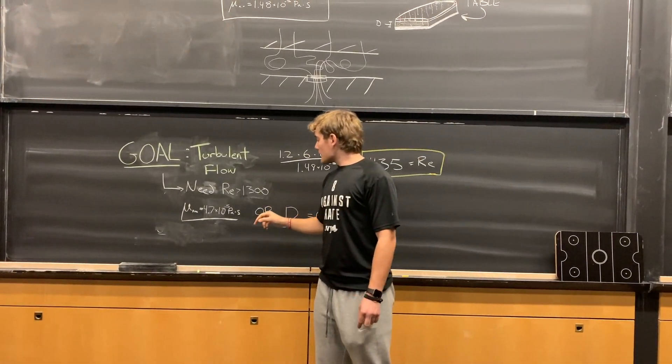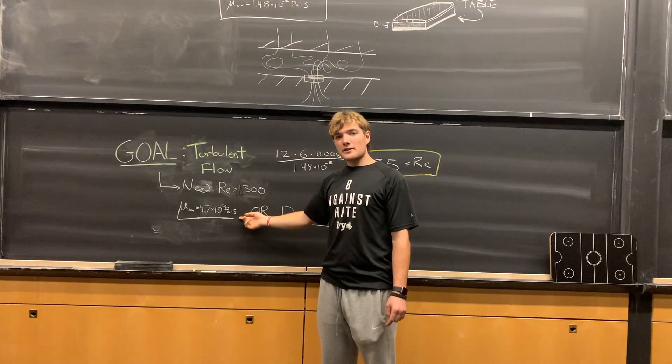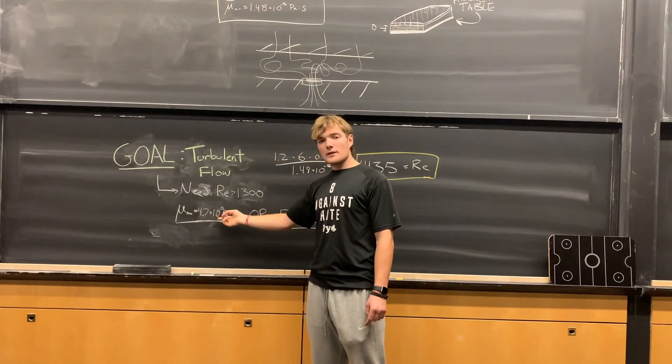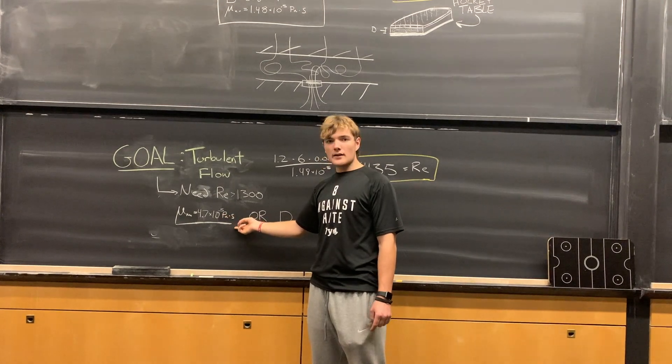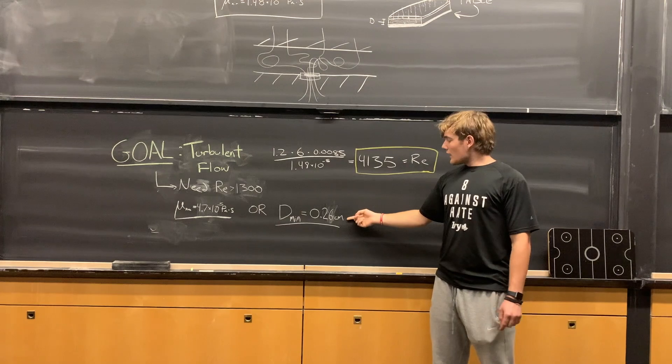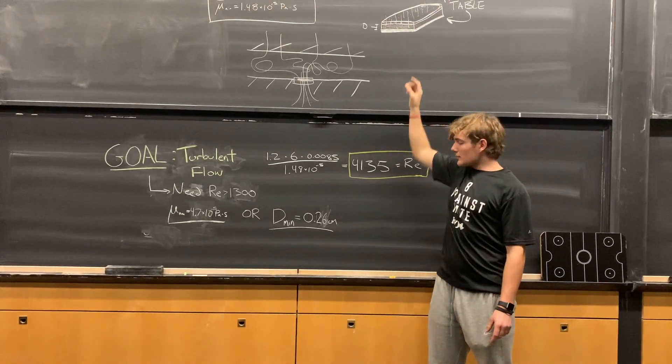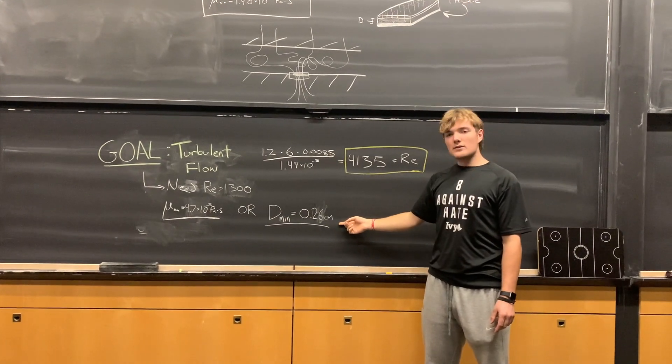Recalculating that, we can say we can use a fluid that has a maximum viscosity of 4.7 times 10 to the negative fifth pascal seconds, so that's four times bigger than air. Or if we keep air, we can bring the diameter or the specific length between the plates down to 0.26 centimeters.